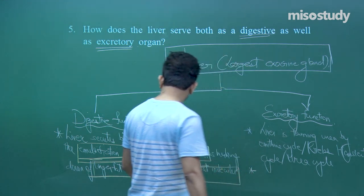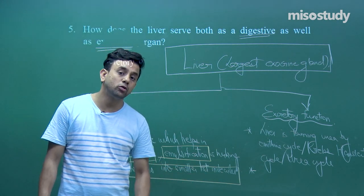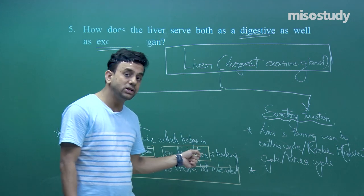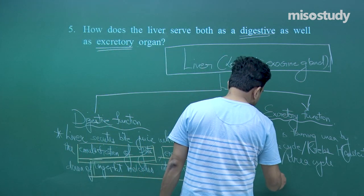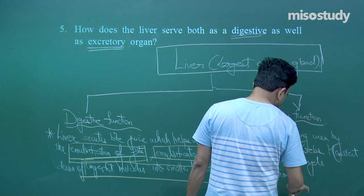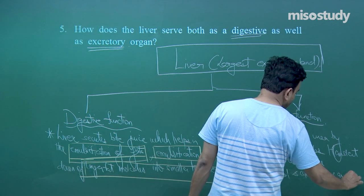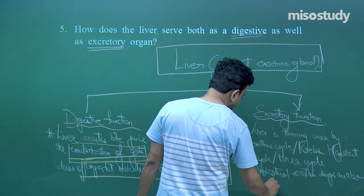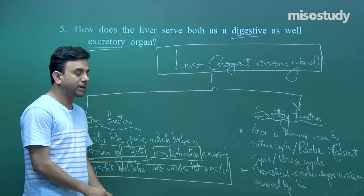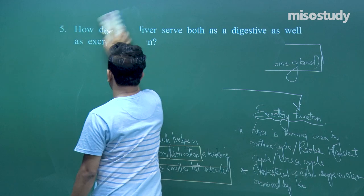Also, the bile juice contains pigments like bilirubin and biliverdin, which are removed in the urine. The liver also removes cholesterol and certain drugs. Hence the liver plays a very important role in the excretory function.